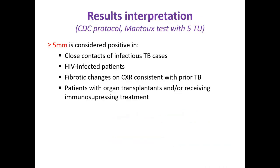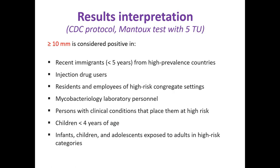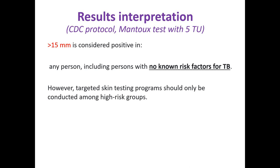Another protocol is used in low-burden countries in people of all ages at risk. An infiltrate more than 5 mm is considered positive in close contacts of infectious TB cases, HIV-infected patients, fibrotic changes on chest X-rays consistent with prior TB, and patients with organ transplants receiving immunosuppressing treatment. Ten mm or more is positive in recent immigrants from high-prevalence countries, injection drug users, microbacteriology laboratory personnel, children under 4 years of age, and infants and children exposed to adults in high-risk categories. Fifteen mm or more is positive in any person, including those with no TB risk factors.